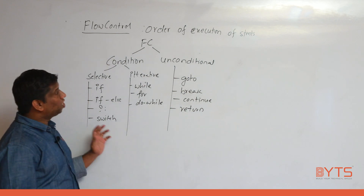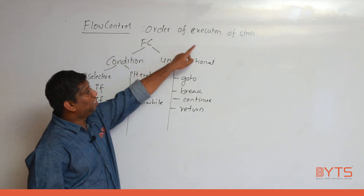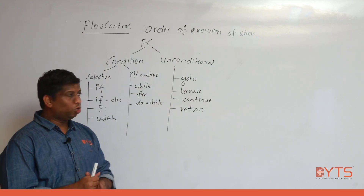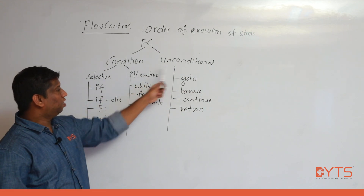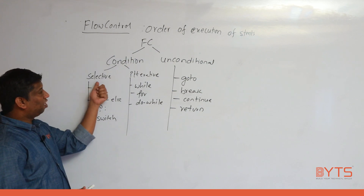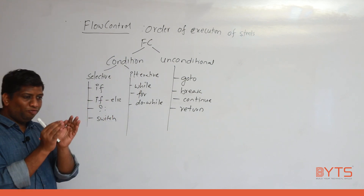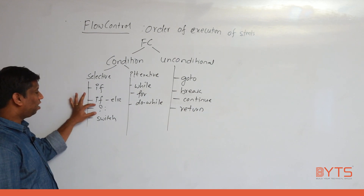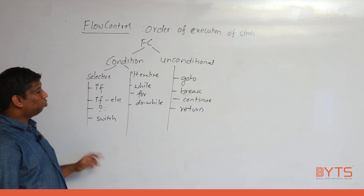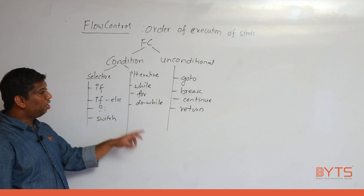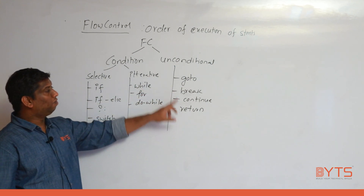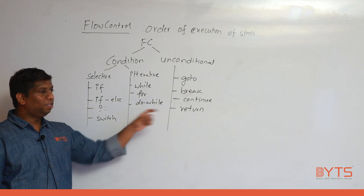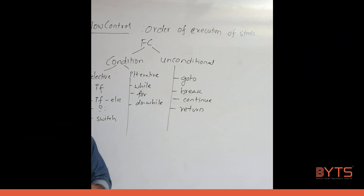We also have return, which we will discuss in the functions concept. To summarize: flow control is the order of execution of statements. It is divided into conditional and unconditional. Conditional includes selective — which covers if and if-else — and iterative, which covers while, for, and do-while. Unconditional includes goto, break, continue, and return. I hope we have completed everything. Return will be discussed in the functions concept. Thank you.